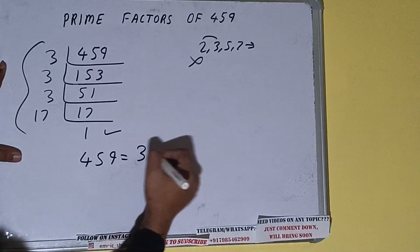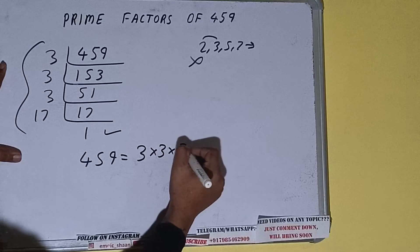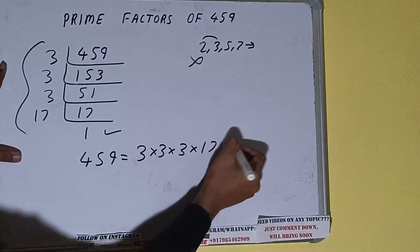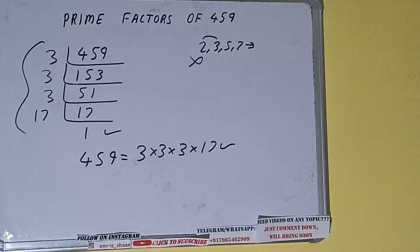That is 3 × 3 × 3 × 17. That will be the answer. So this is all about prime factors of 459. If you found the video helpful, please do hit the like button, do consider subscribing, and thanks for watching.